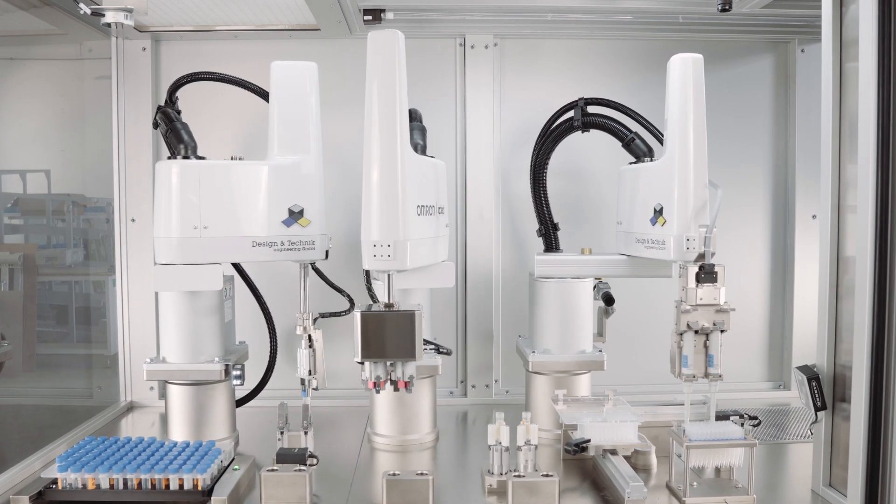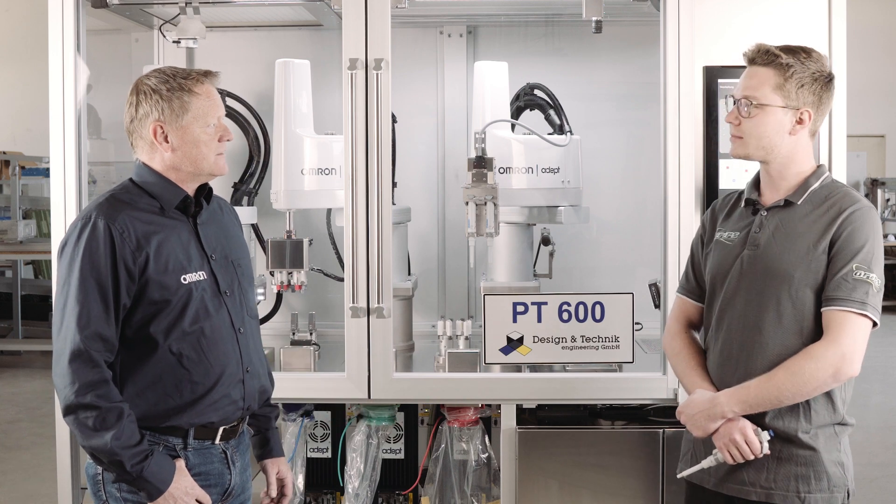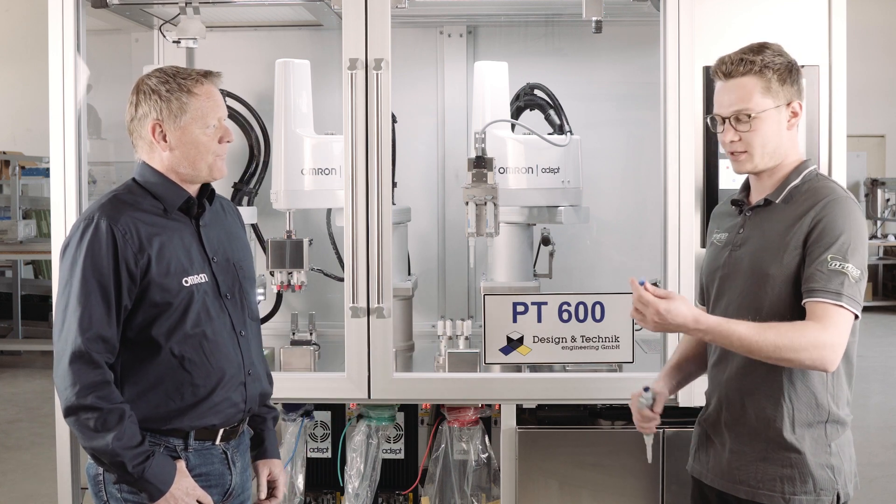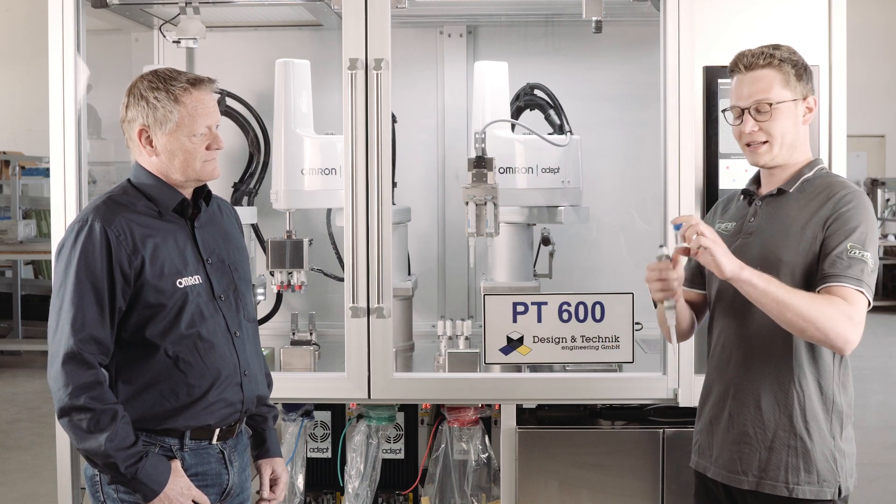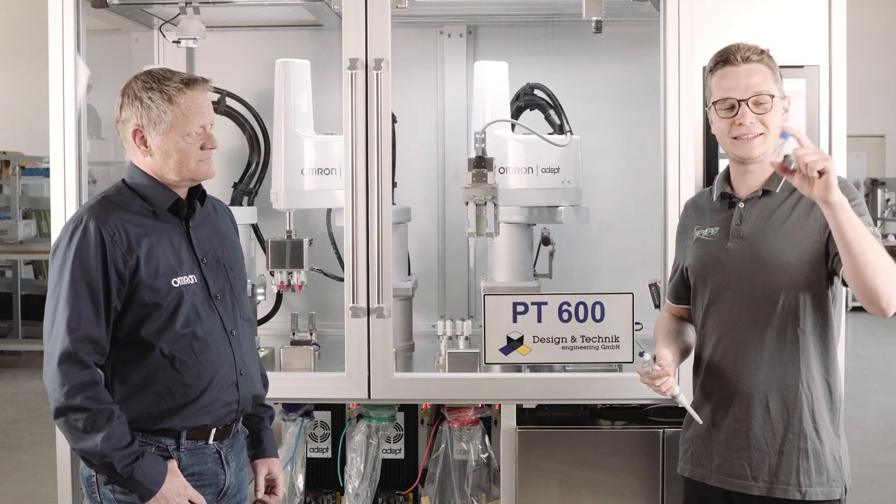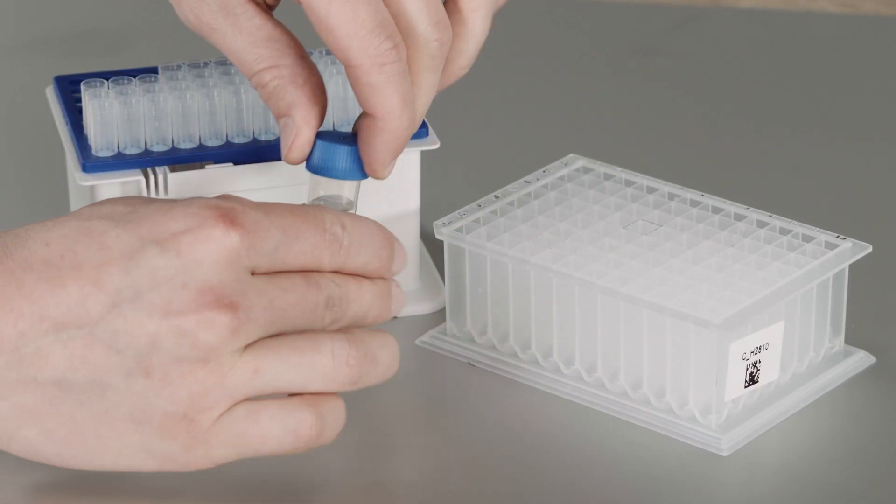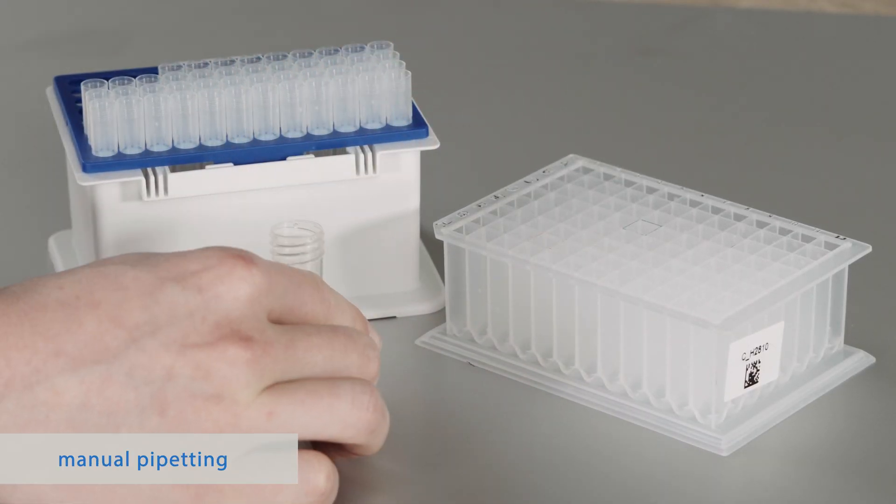Why exactly do you have to automate the pipetting process? What exactly are you doing there? When I look at such a standard Corona sample, I can't actually test it right away. First of all, I have to remove the liquid and transfer it to a testable jar.